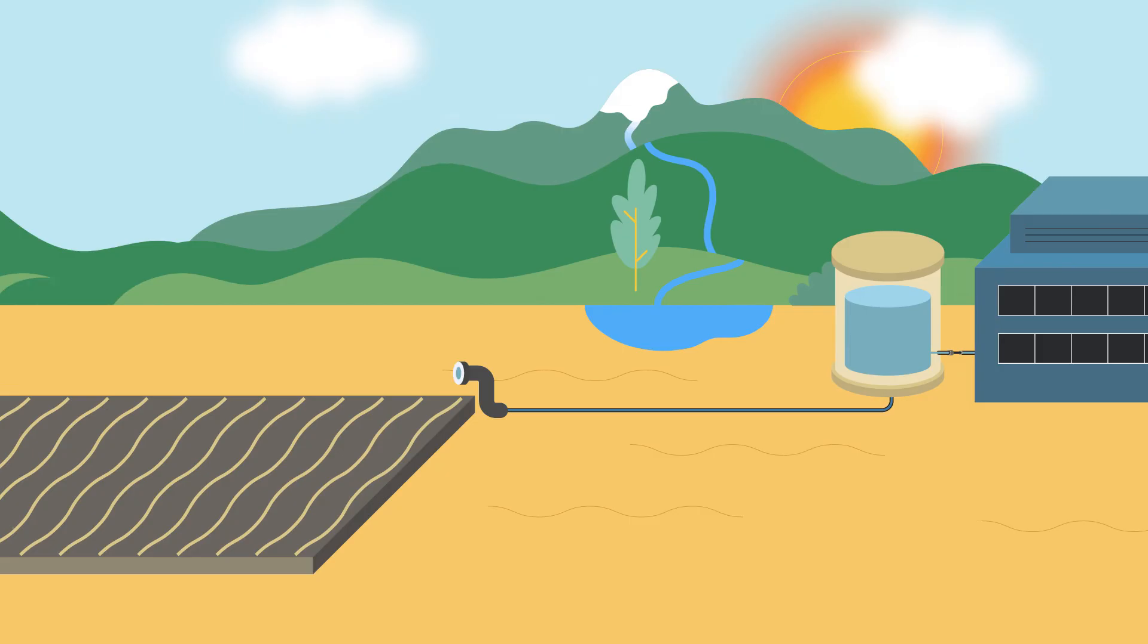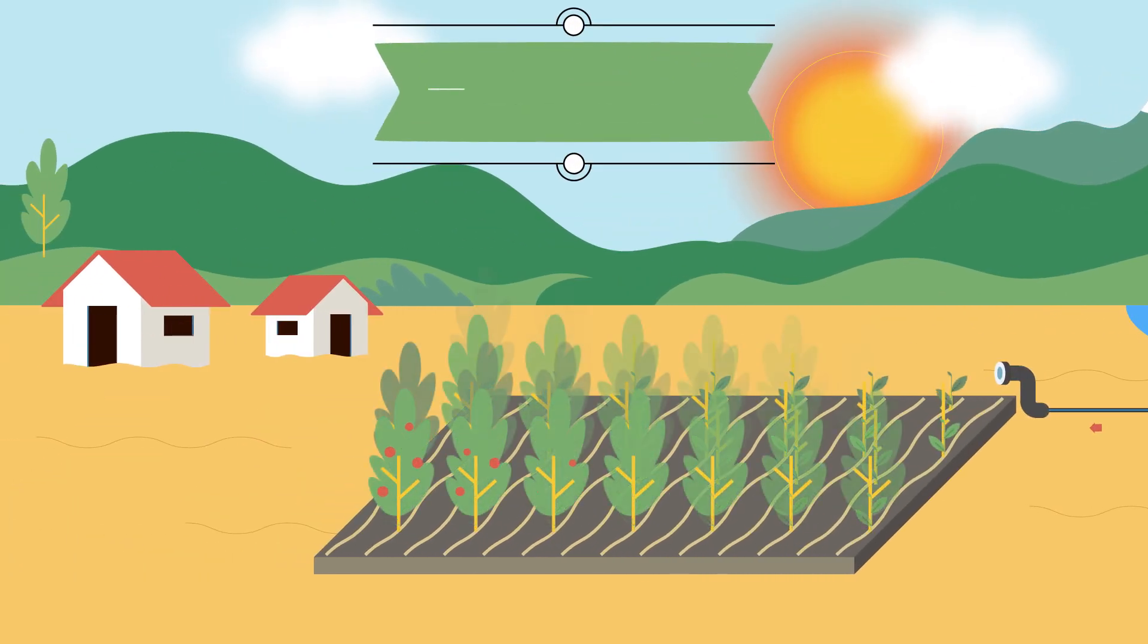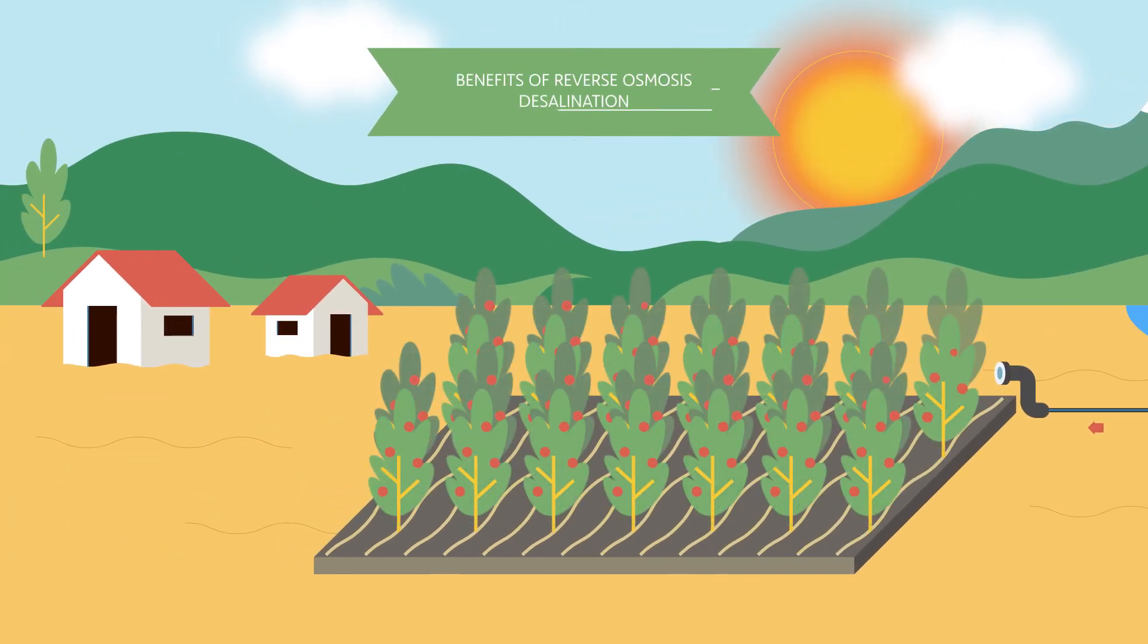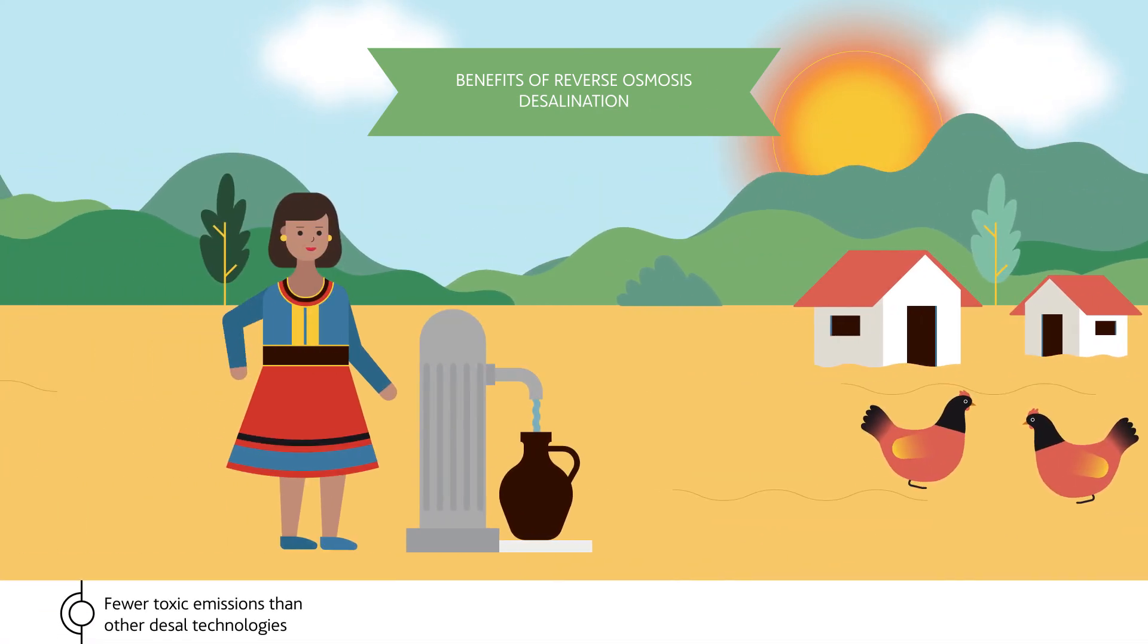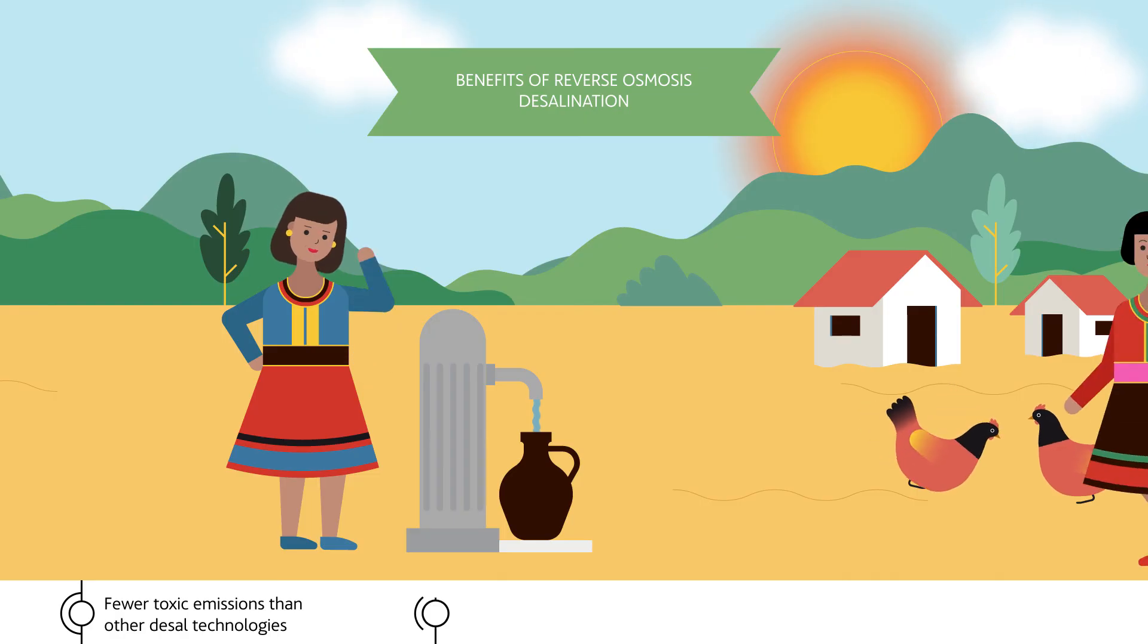Reverse osmosis is not only the most advanced desalination system in the world today, it is the most efficient and beneficial for the planet. It generates up to four and a half times fewer greenhouse gas emissions than all other technologies.